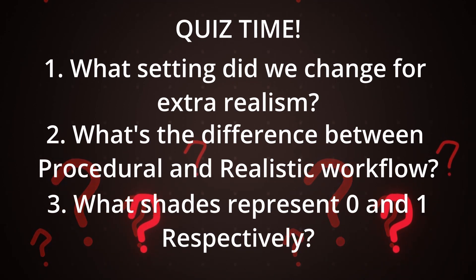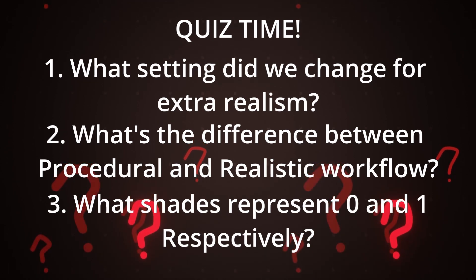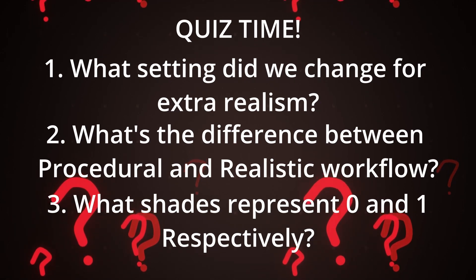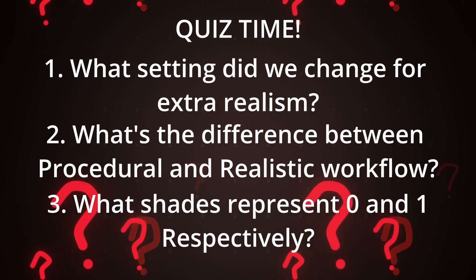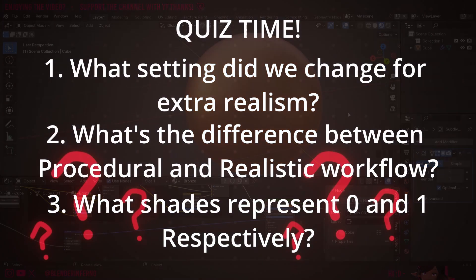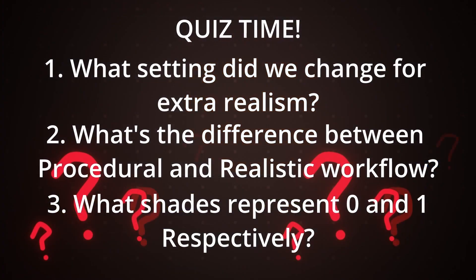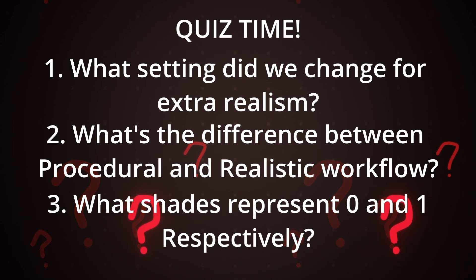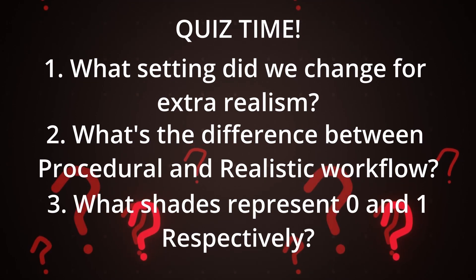Number two: what's the difference between the procedural workflow and the realistic image texture one? Technically in both workflows we used procedural elements, but the difference is that in the second workflow we used image textures alongside procedural textures. Procedural textures like the grooves and the Musgrave imperfections can be done entirely inside Blender, whereas the more realistic option requires textures from outside Blender. Also, procedural textures are mathematically generated meaning they aren't limited by pixels, unlike image textures. The image textures from online also needed to be used with the UV texture coordinate. Number three: zero represents black and one represents white — when the lights are off it's zero, and when the lights are on it's one.